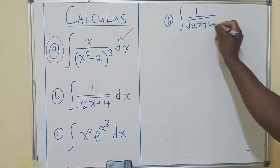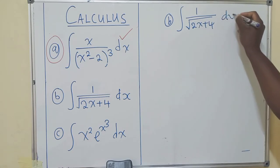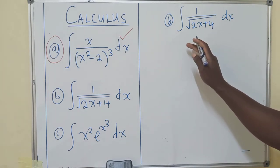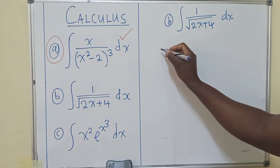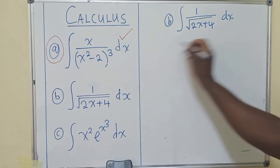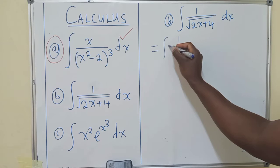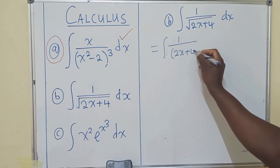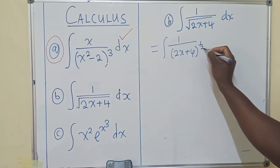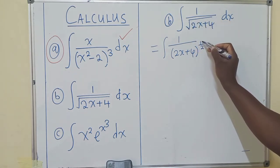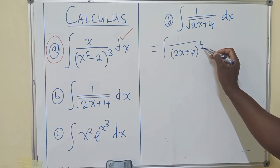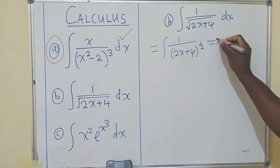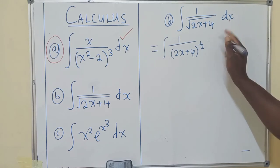So here, just by looking, we use u-substitution to integrate it. Before we use u-substitution, we can change this. This is the same as this. We know that square root is the same as power 1/2. So after writing this, we can now say, actually we have to put dx.